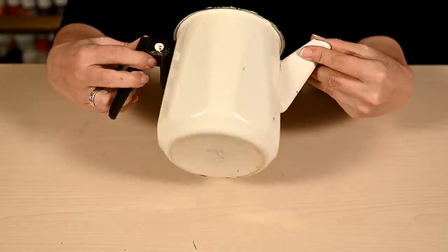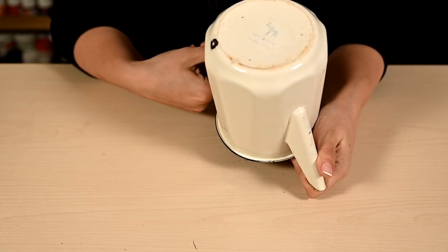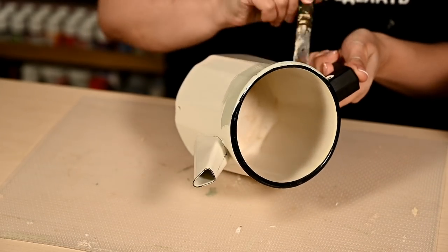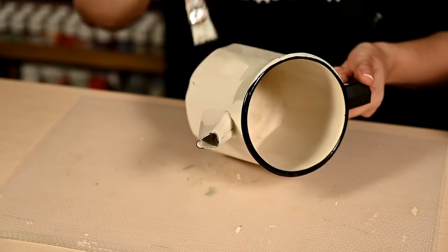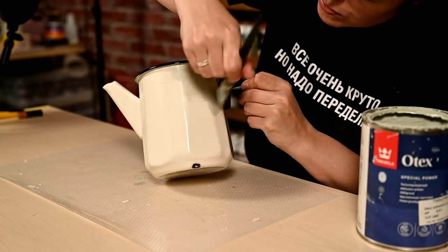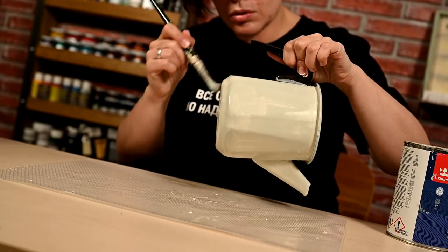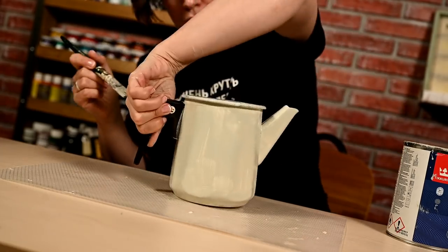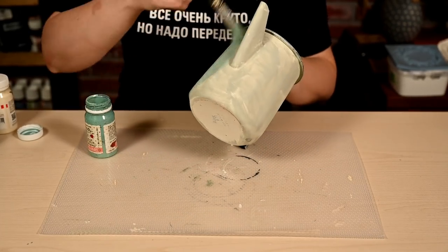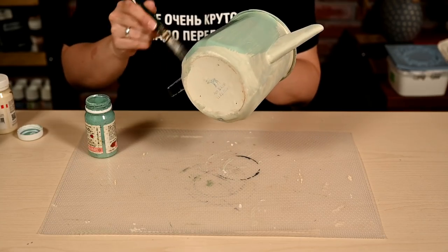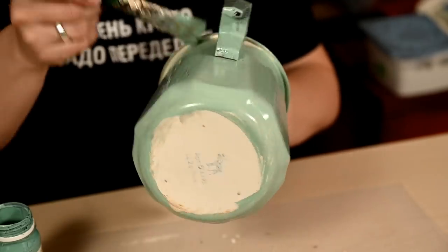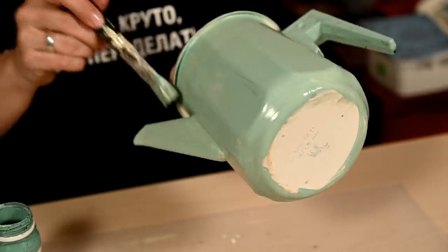My next project is an old coffee pot. I like its shape but I've decided to change its color. First I'm cleaning and then priming it just as the other items. I've decided to paint it a soft mint color. I love this shade. It's bright and very spring feeling and at the same time muted and not flashy. I'm giving it three layers to be sure the shade is dense and uniform.